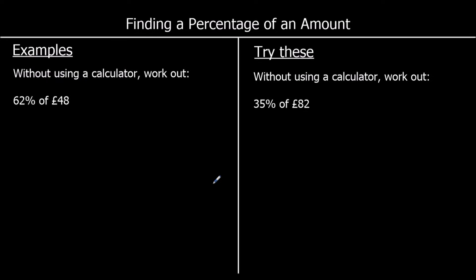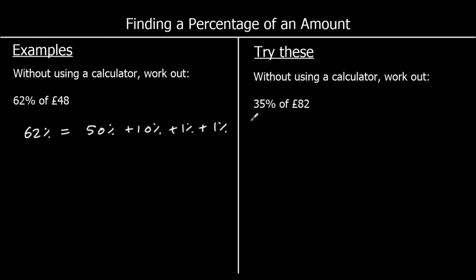This question says, without using a calculator, work out 62% of 48 pounds. We can work out any percentage using combinations of 50%, 10%, and 1%. To find 62%: 62% = 50% + 10% (which makes 60%) + 2 × 1%. So let's work out each of these bits individually and then add them together. 50% will be half of 48; to find 50%, we divide by 2, so 50% is 24 pounds.